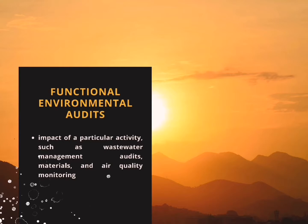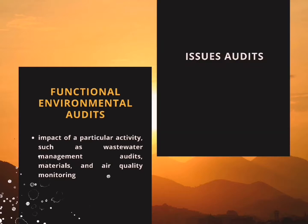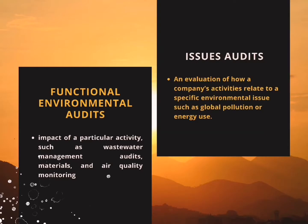The third type is functional environmental audits, which focuses on one element or impact of a particular activity, such as water, waste management, materials, and air quality monitoring. The fourth type is issues audits — an evaluation of how a company's activity relates to specific environmental issues such as global pollution or energy use. It also covers inadequate internal controls, inadequate controls over financial reporting, and inadequate accounting procedures.